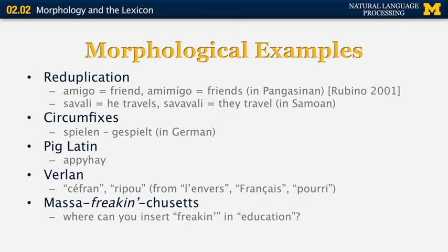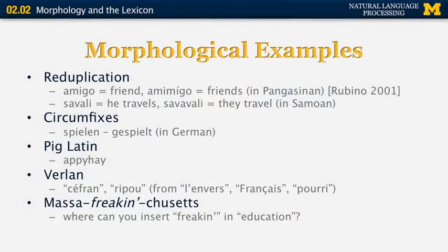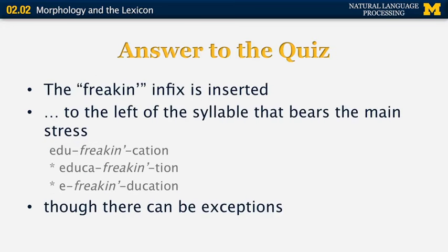Here's an example in English. You may have heard: 'Where are you going? I'm going to Massa-freaking-chusetts.' You can insert a phrase like 'freaking' in the middle of a word, but you cannot insert it randomly. For example, you wouldn't say 'Ma-freaking-sachusetts' or 'Massachu-freaking-setts.' Where would you insert it in 'education'? You probably can't say 'Edu-ka-freaking-tion,' but you can say 'Edu-freaking-cation.' The rule is that the infix 'freaking' is inserted to the left of the syllable that bears the main stress.